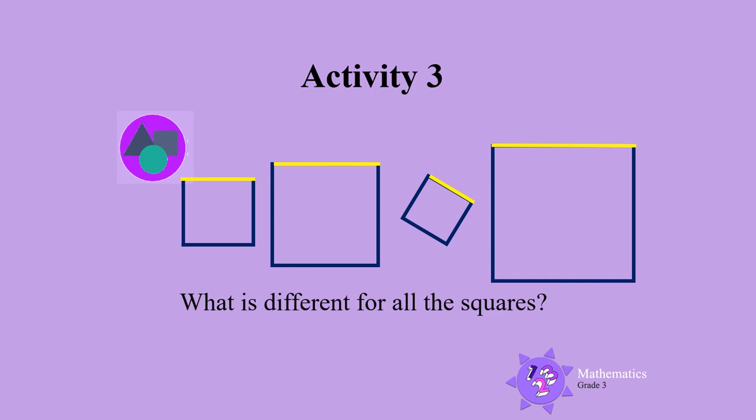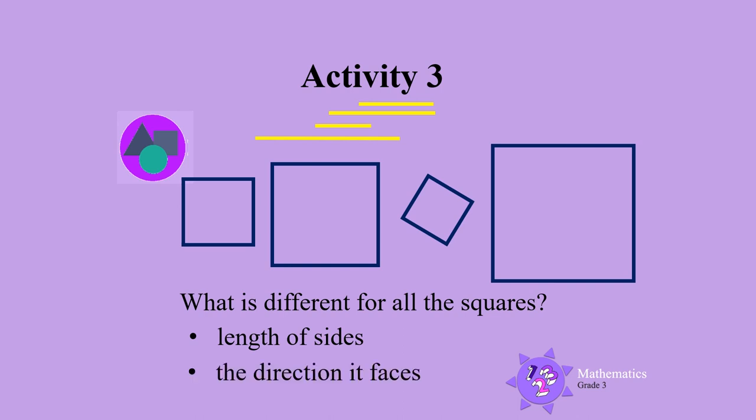What is different for all the squares? Since all the squares are different, the lengths of the sides of each square will be different. But the length of the sides in the same square is the same. The way that the third square faces is also different.